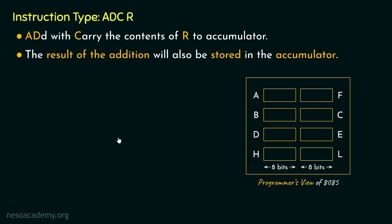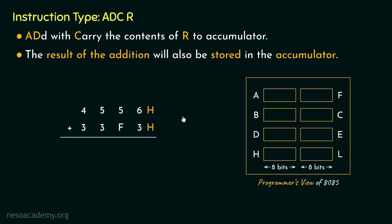We as users might need to add multibyte numbers using the 8085 microprocessor. For example, say we would like to add the numbers 4556H and 33F3H. Notice we are using 4-digit hexadecimal numbers. A 2-digit hexadecimal number in binary is 8 bits. Therefore, a 4-digit hexadecimal number will be 16 bits in binary, since each hexadecimal digit represents 4 bits.